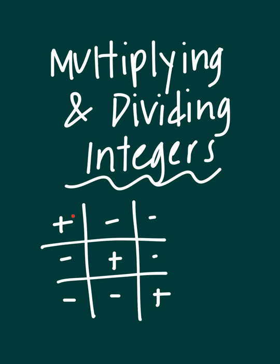You can go any direction. When you multiply or divide two positives you get positive. When you multiply or divide a positive and a negative, you get negative.